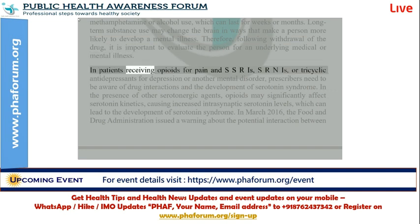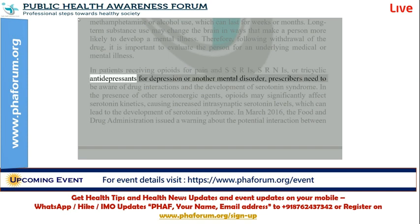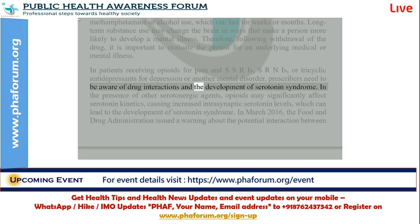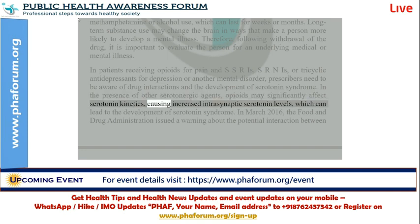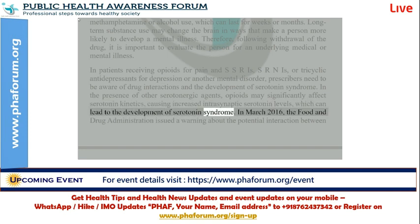In patients receiving opioids for pain and SSRIs, SNRIs, or tricyclic antidepressants for depression or another mental disorder, prescribers need to be aware of drug interactions and the development of serotonin syndrome. In the presence of other serotonergic agents, opioids may significantly affect serotonin kinetics, causing increased intrasynaptic serotonin levels, which can lead to the development of serotonin syndrome.